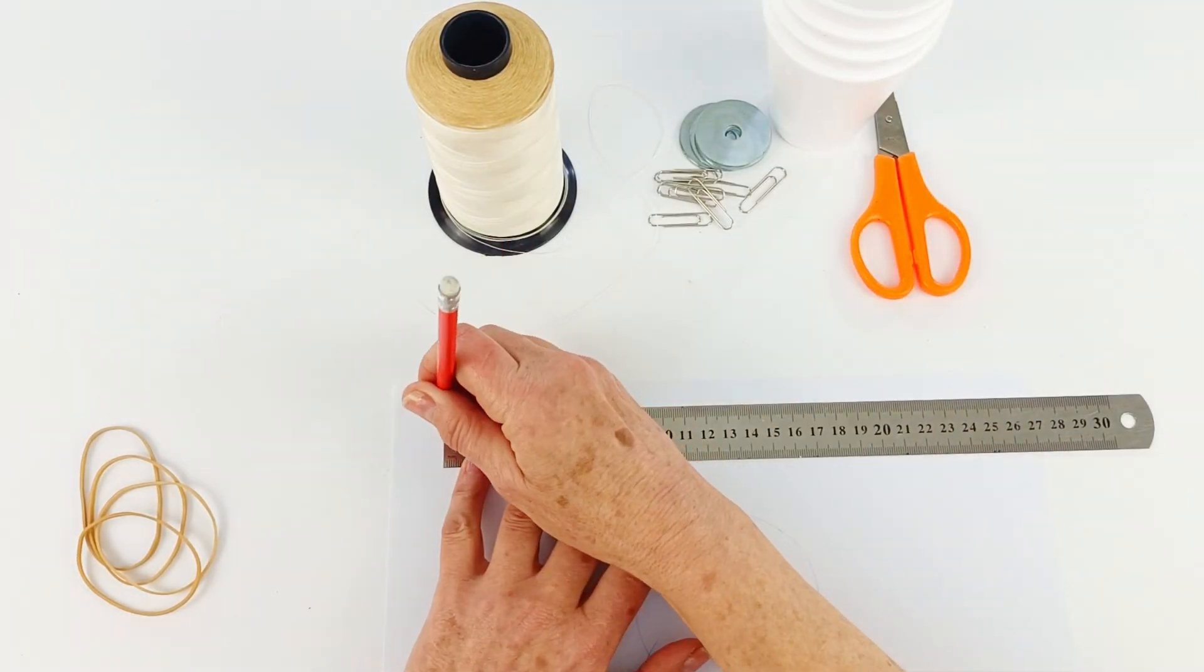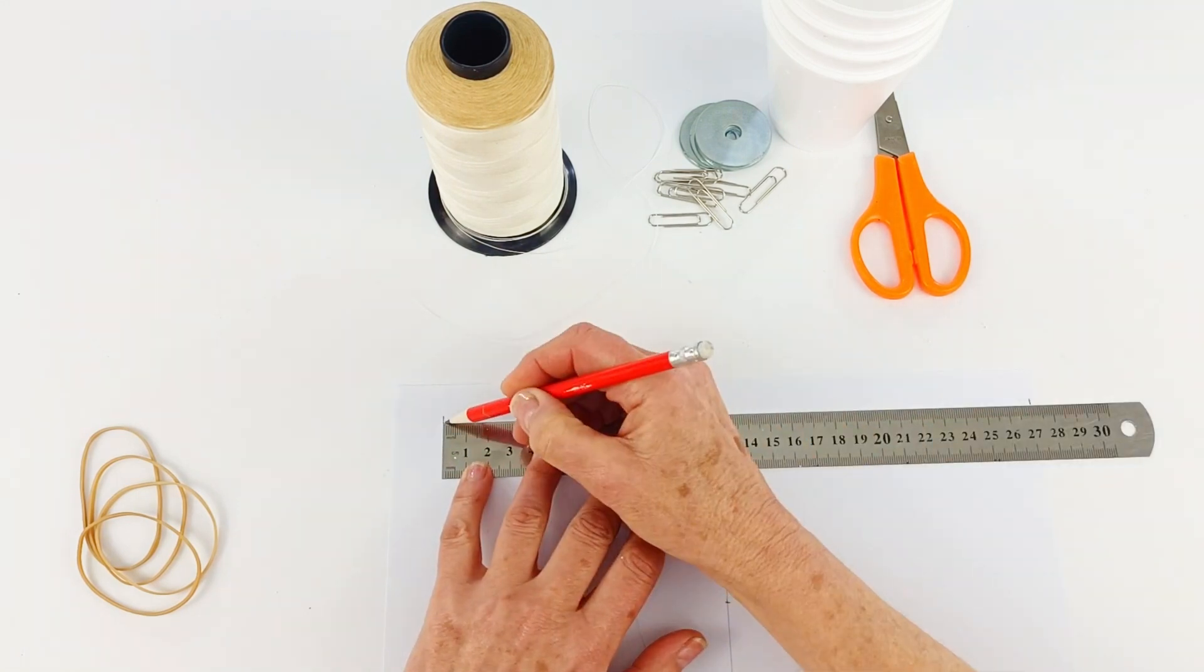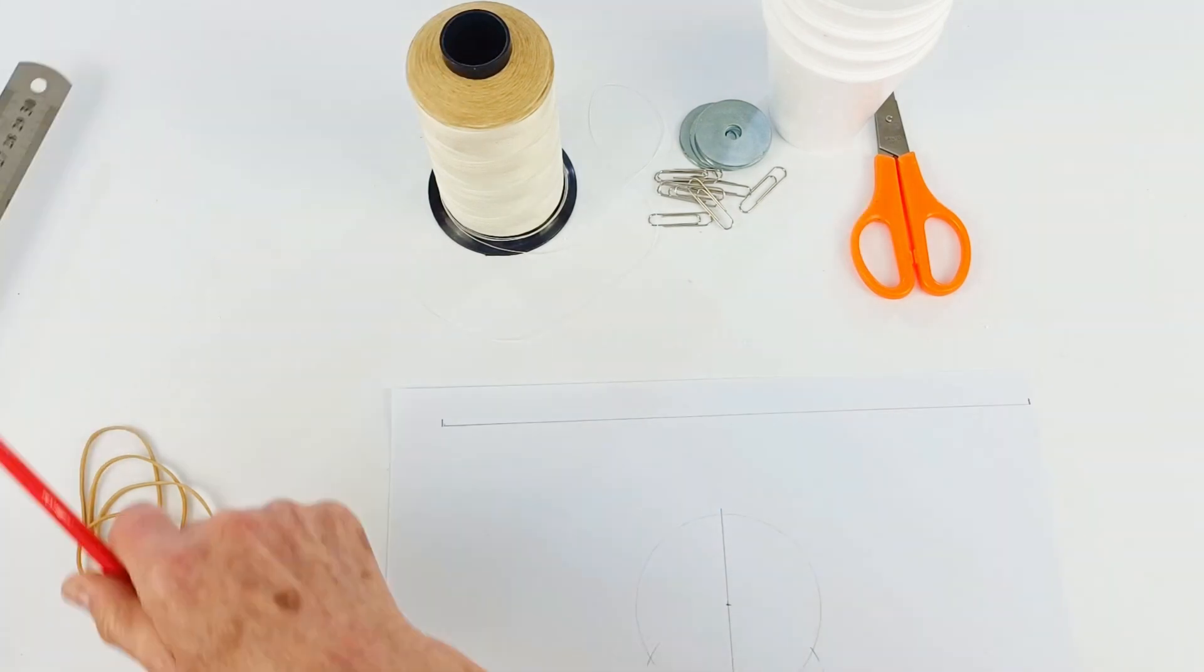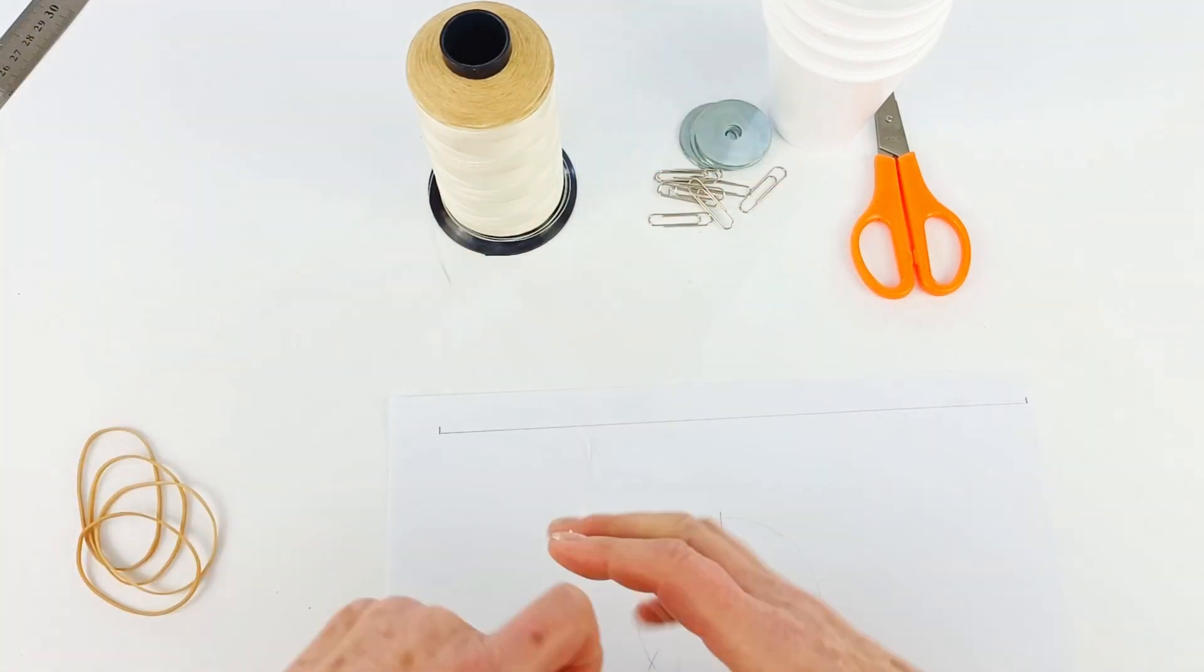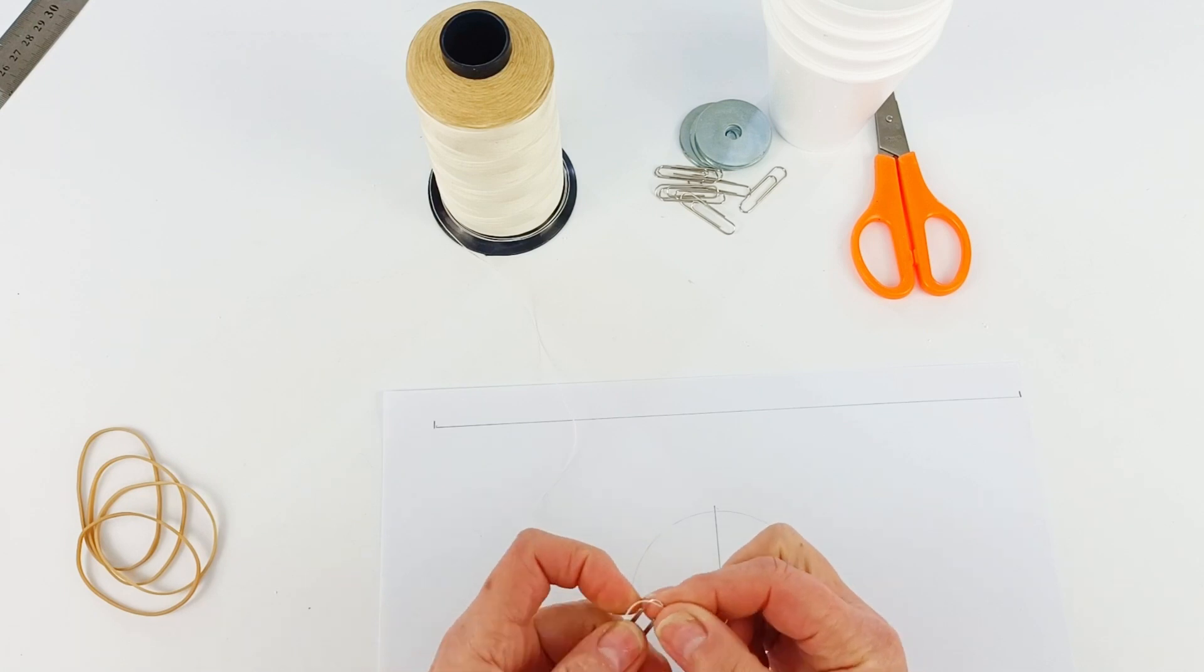The height of your stools or anything like that will change your measurements for this but just focus on that 10 centimeters. For us this means that we want our strings for hanging our cups to be about 27 centimeters.